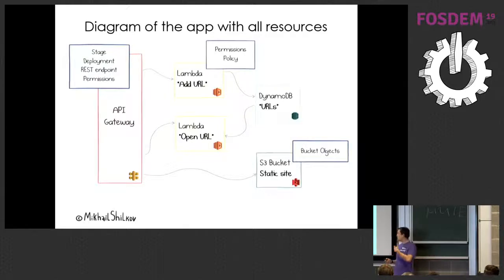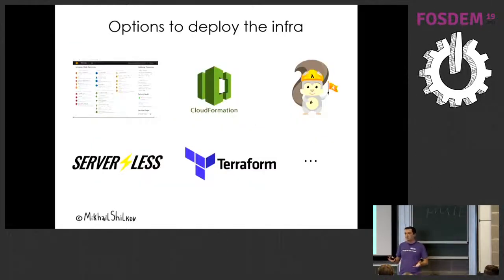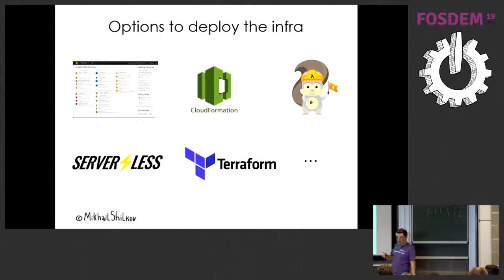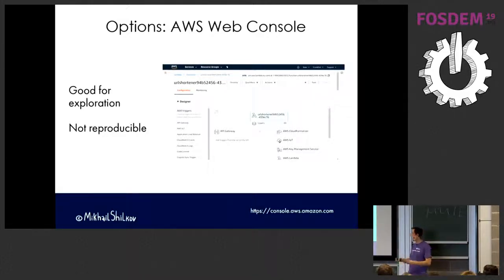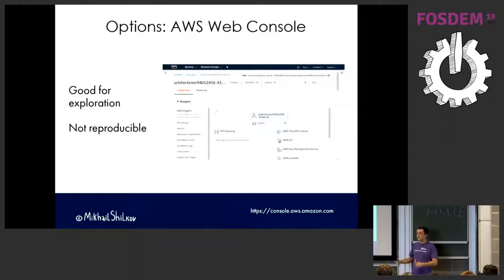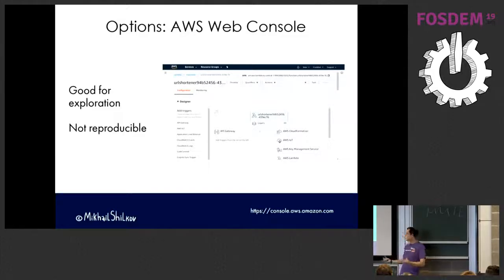There are many options for provisioning resources in AWS. The first obvious one is the AWS console - you go to the website, click buttons, the UI is easy to follow, and Amazon does some magic like setting up permissions by default. It's good for exploration, but very hard to reproduce because when you do it today and a colleague does it next month, you'll have two different environments. You also can't easily evolve the application over time.